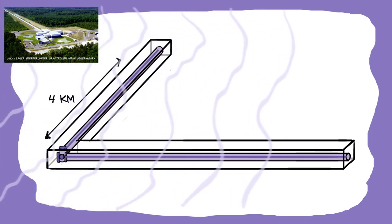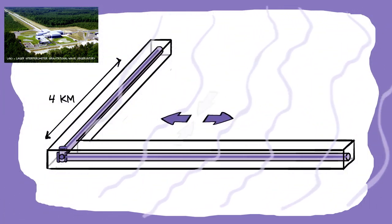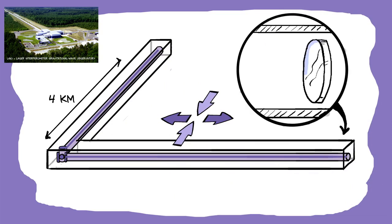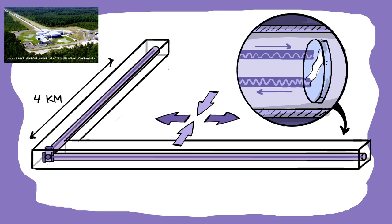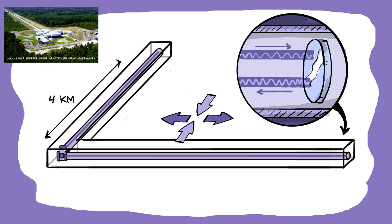When a gravitational wave comes through, it stretches space in one direction and squeezes space in the other direction. By measuring the interference of the lasers as they bounce between the different points, physicists can measure very precisely whether the space in between has stretched or compressed.